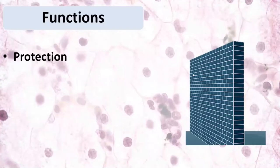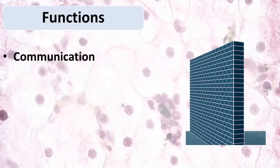The functions of epithelial tissues: epithelial tissues are borders between two environments, and they protect our organism from the influence of the outer environment. All epithelia also provide communication between our organism and the outer environment.